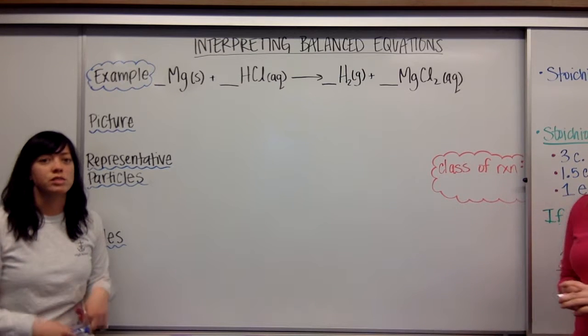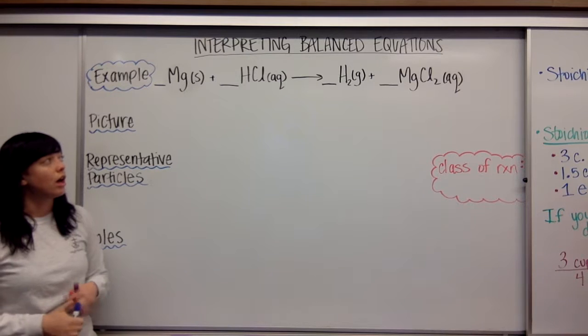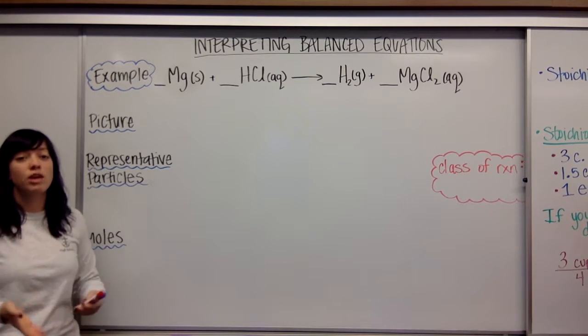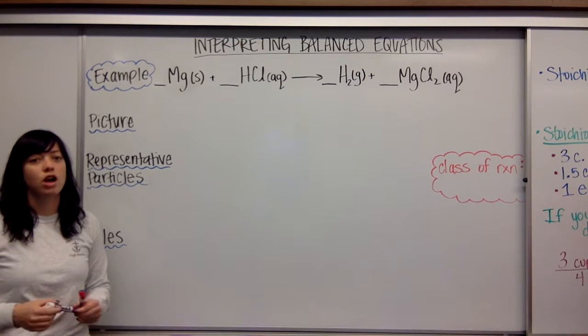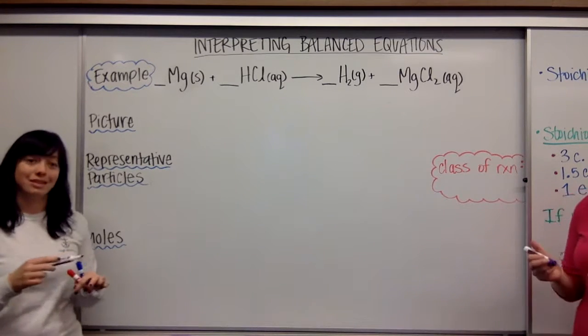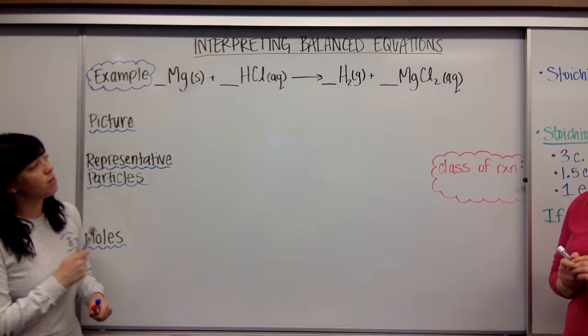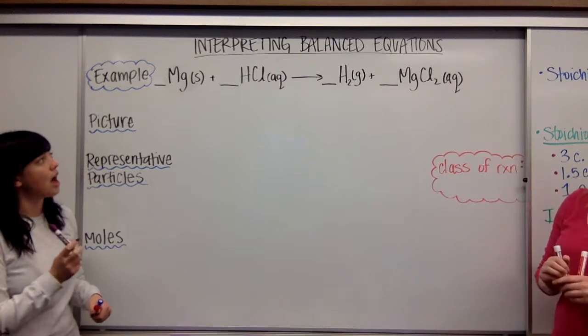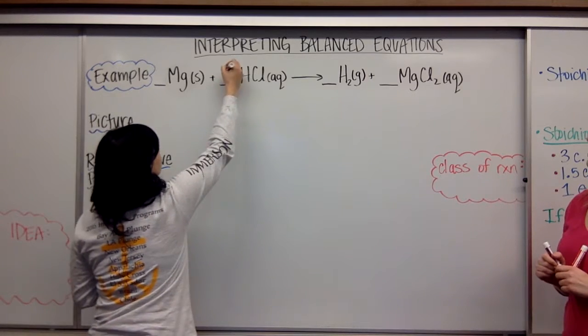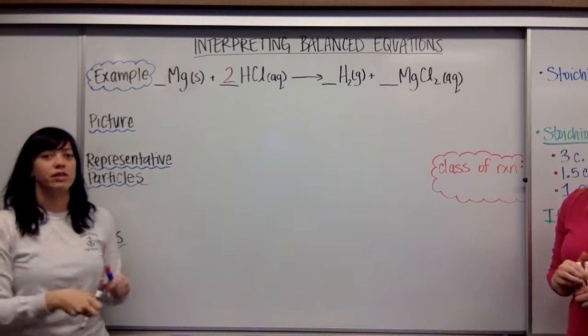So our first example is magnesium metal reacts with hydrochloric acid to produce hydrogen gas and magnesium chloride. The first way that we are going to interpret these balanced equations is we are going to draw our particle pictures, essentially. So I am going to, or actually before that, though, we need to make sure that our equation is balanced. Sometimes they will be balanced, sometimes they won't. I have one magnesium on each side. I have one hydrogen in my reactants. I have two in my products. So I'm going to go ahead and put a two right here, and then I end up with two chlorides on each side, so I am balanced. Great.